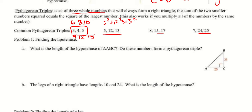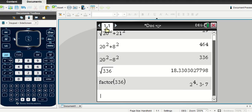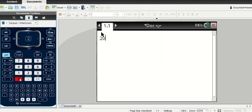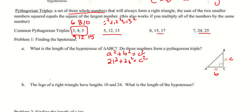For part A, we're finding the length of the hypotenuse. We have side b and side a given, so using a squared plus b squared equals c squared, we plug in: 21 squared plus 20 squared equals c squared. On the calculator, 20 squared plus 21 squared gives us 441 plus 400.